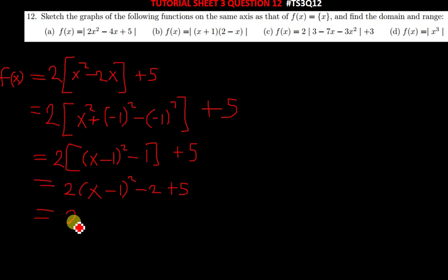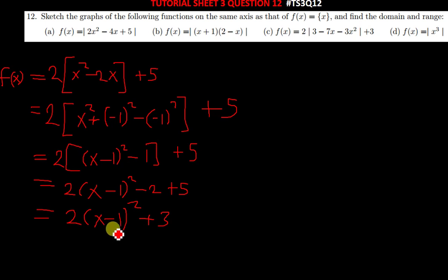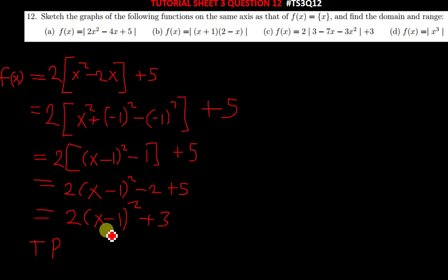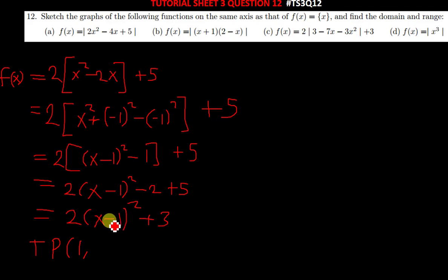This is going to give you positive 3. So basically, to find the turning point for this quadratic equation, you equate what is in the brackets to 0 and find the value of x. The value of x is 1. The value of y is just that 3. So (1, 3) is the turning point.